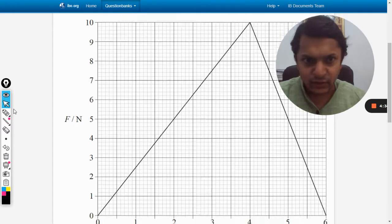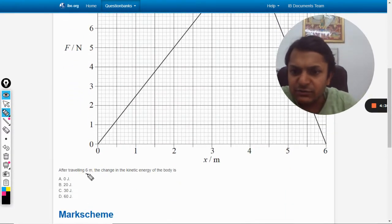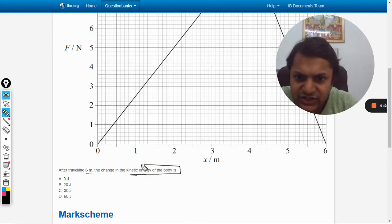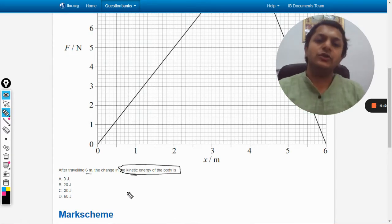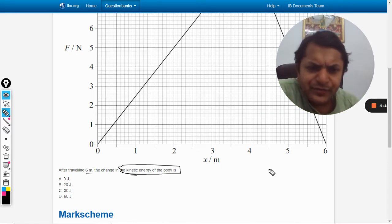Okay fine. So what are we supposed to find? After traveling six meters, the change in kinetic energy of the body is... so sorry, we need to find the total change in kinetic energy.